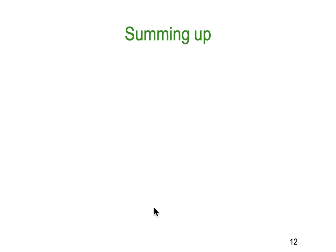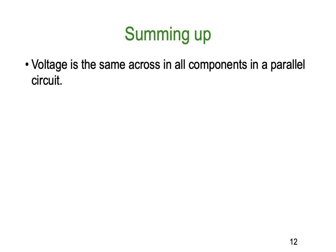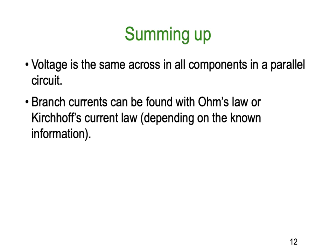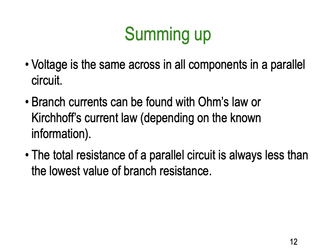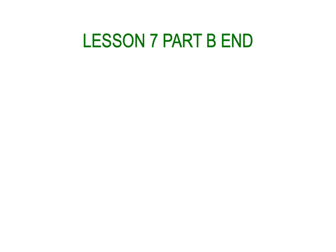So let's sum up our last two lessons, just quickly. The voltage is the same across all the components in a parallel circuit. So the supply voltage is the voltage drop across each of the components or the loads. The branch currents can be found with Ohm's law or Kirchhoff's current law, depending on what you do and don't know. The total resistance of a parallel circuit is always less than the lowest value of the branch resistance. So that ends our lesson number seven, part B. I hope you've enjoyed learning something about resistors in parallel, in parallel circuits.